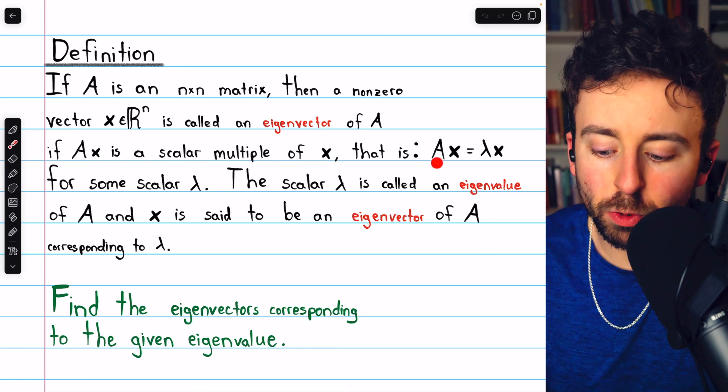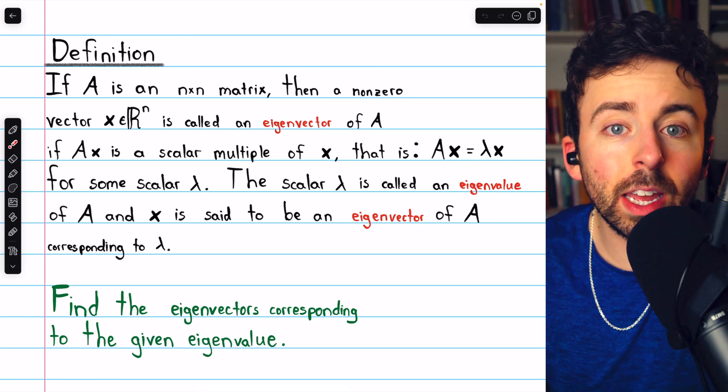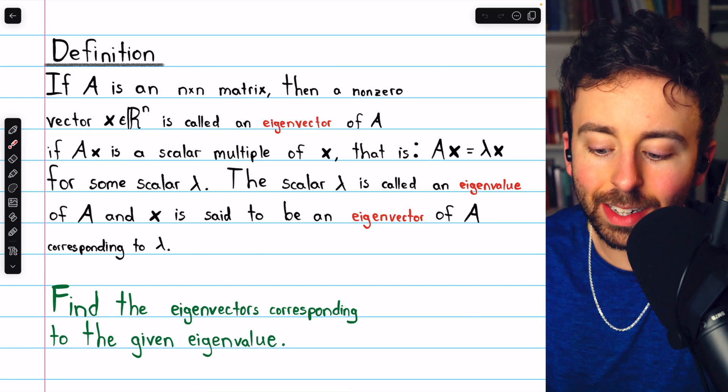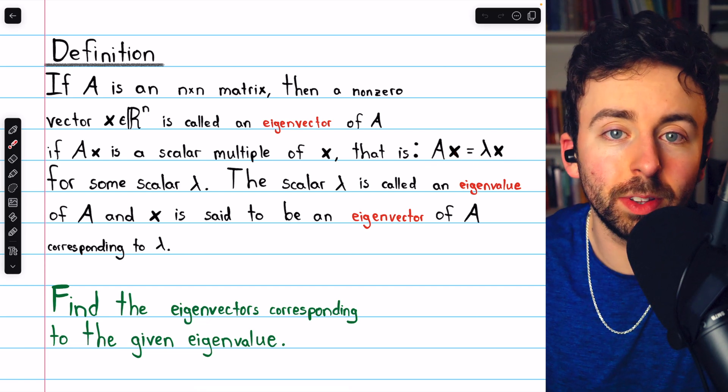So in each example, we'll be given a matrix A and an eigenvalue, that's lambda, and we'll be looking for all vectors x so that A times x is actually just lambda times x. Those are the eigenvectors.